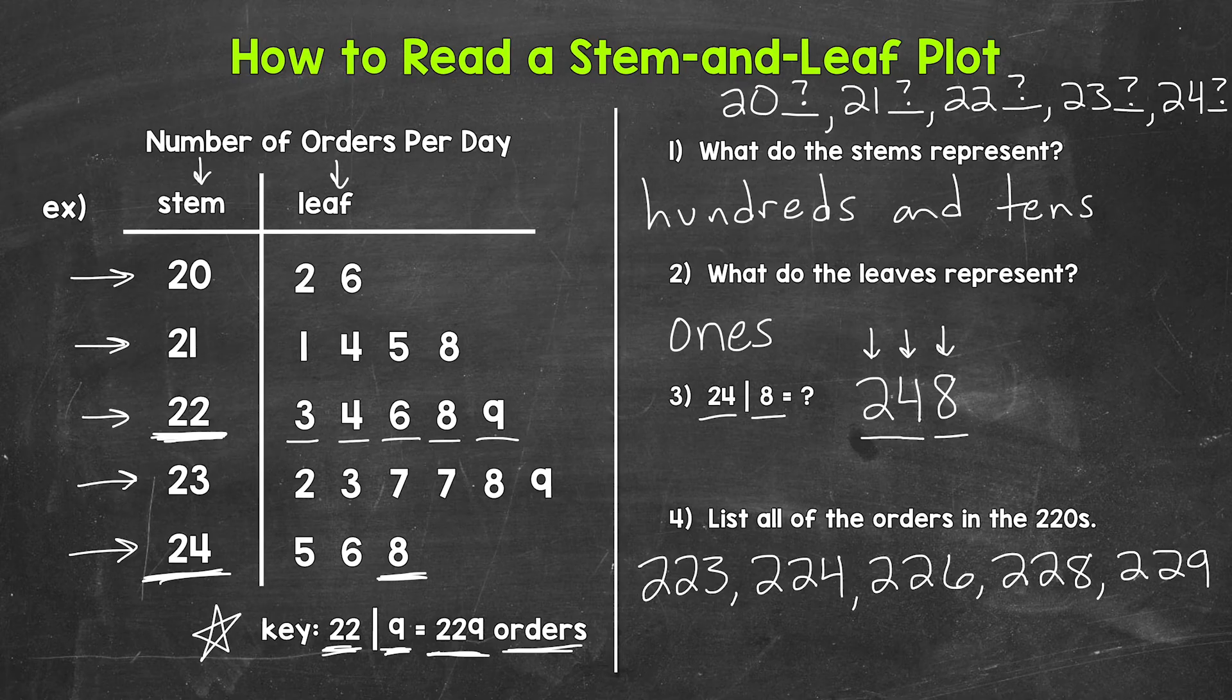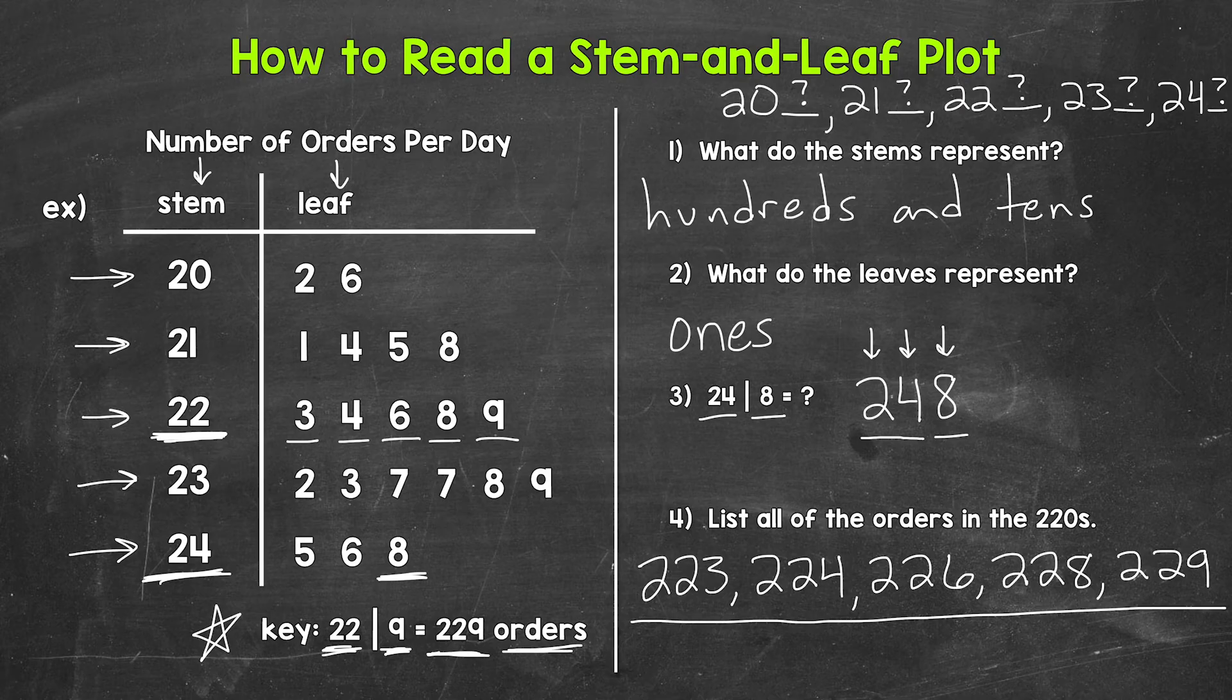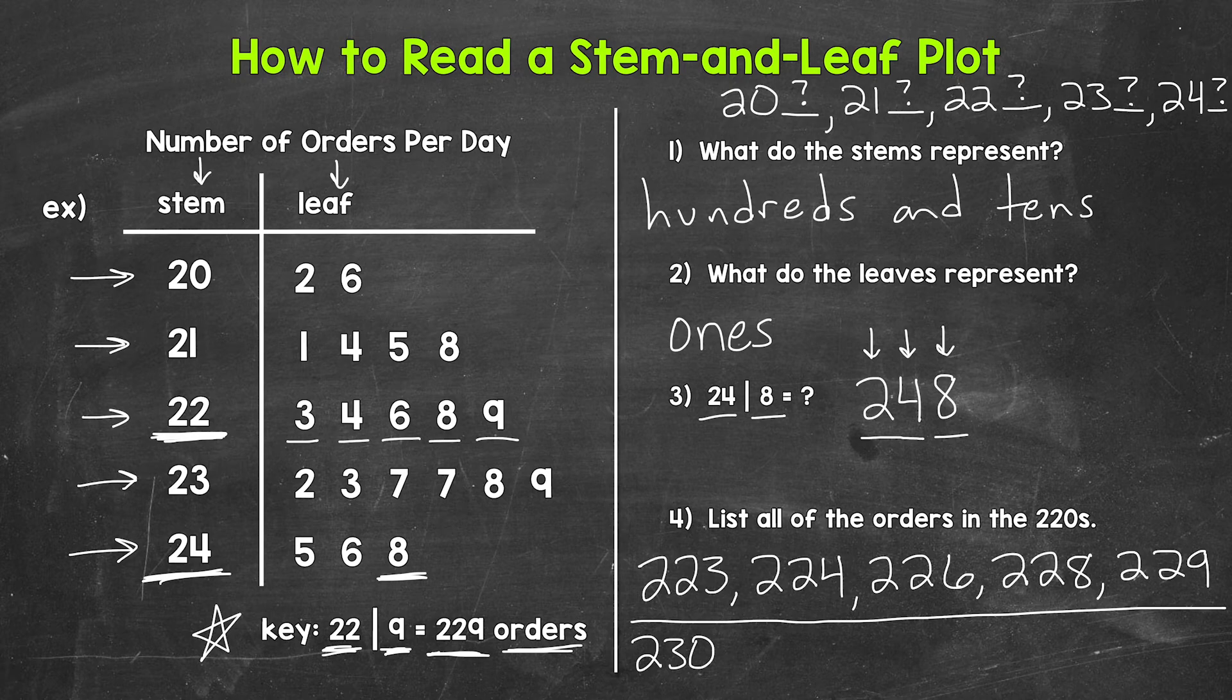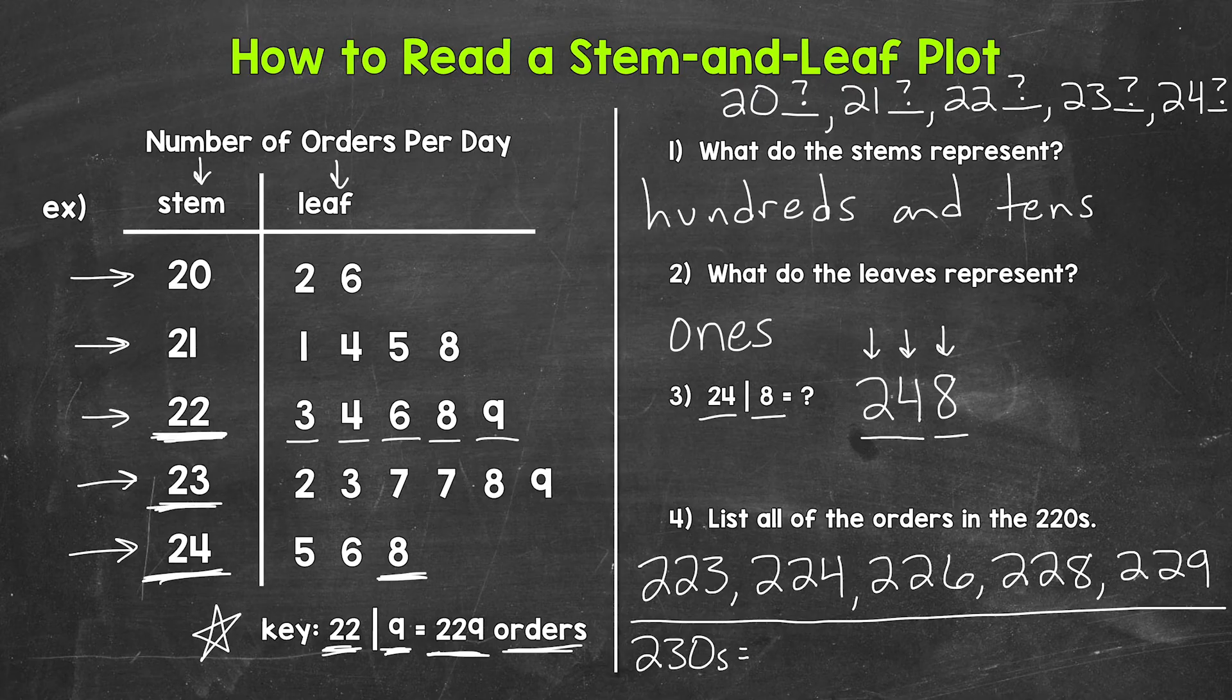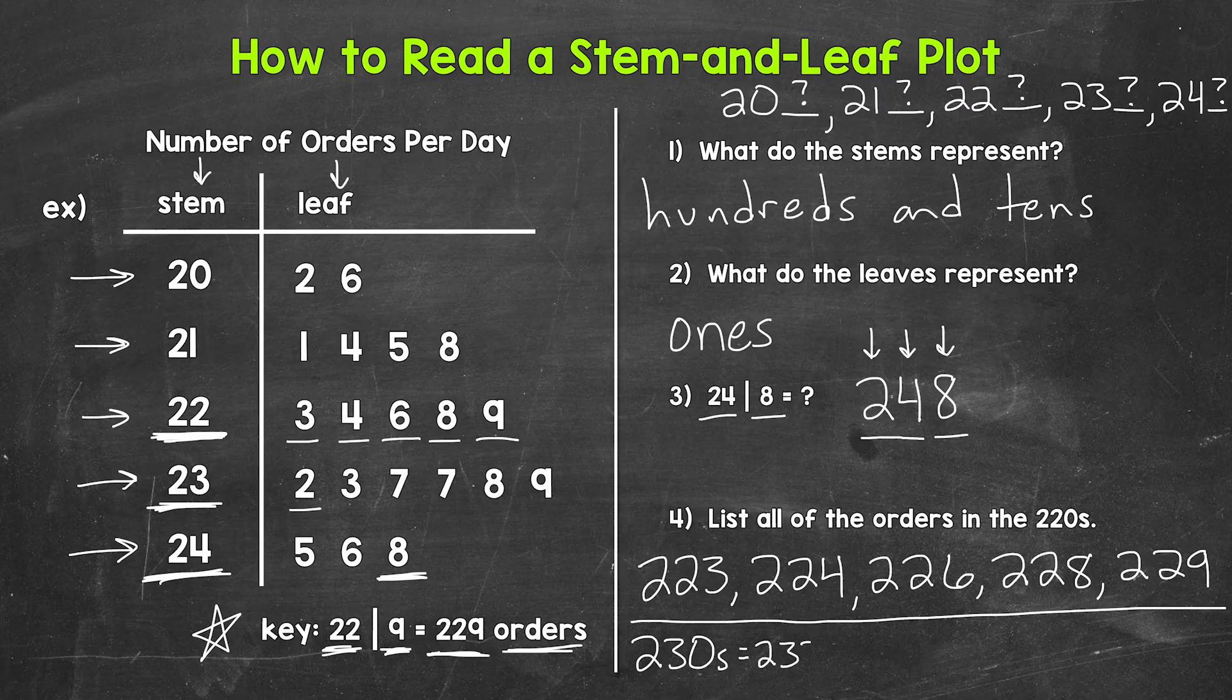Now just in case you'd like one more example, let's go through the 230s. So 230s are going to equal, well we need to look at the stem of 23. And then we will start with the leaf of two. So that will be 232.